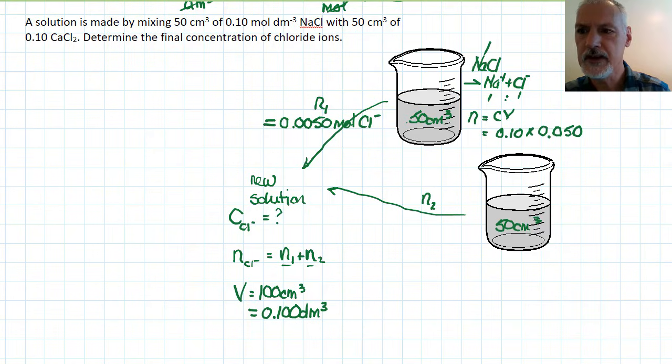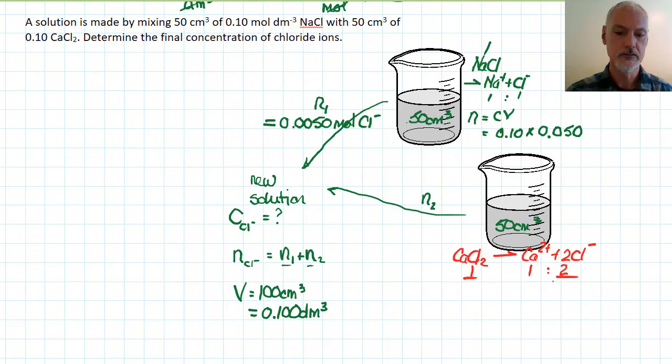Now my second beaker is a little bit different. This material down here is calcium chloride - we saw it earlier. It will break into calcium ions and 2 chlorine ions. The ratio here being 1 to 1 to 2. So every one of these will produce 2 chloride ions.